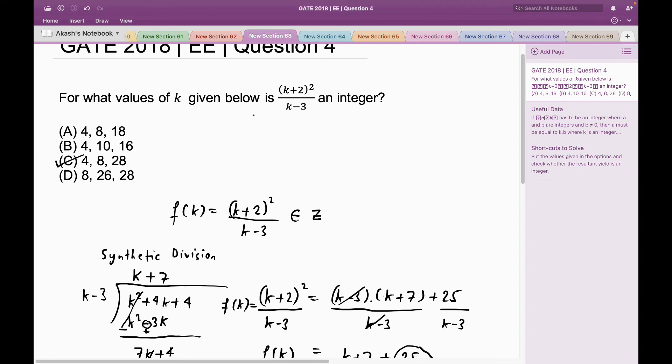For instance, if I substitute 4 in this fraction, I would get 6² divided by 1, which is an integer. Also, if I put 10 in this fraction, then I would get 12² divided by 7, which is not an integer.